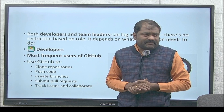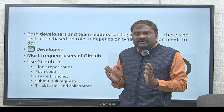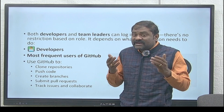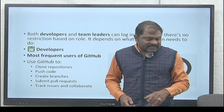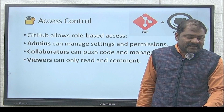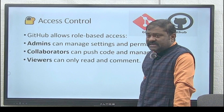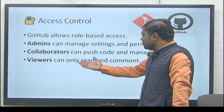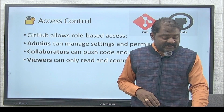A repository is a separate folder created on the GitHub server. The code available in that repository is shared with all developers. Developers collect and modify the code by installing the Git client. There are three types of users who can use GitHub: admins, who manage settings and permissions; collaborators (developers), who can push code and manage issues; and viewers, who can only read and comment on the code.